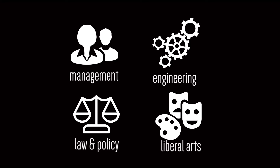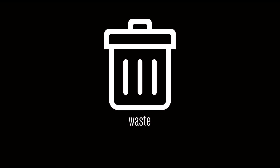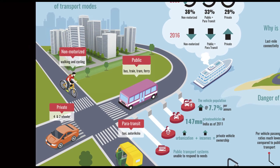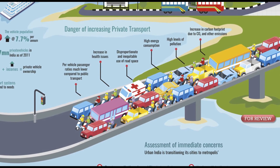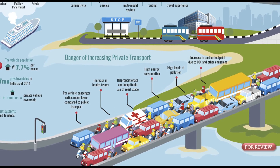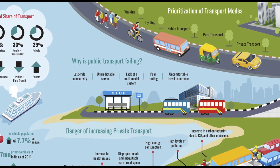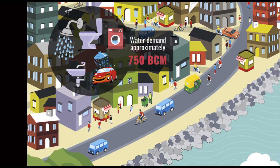Part A is where you tackle the three themes, which are mobility, water, and waste. Part A is essentially an analytical essay writing exercise. What we have asked you to do is pick any one of these issues and develop a blueprint or solution based on certain key objectives and parameters that we have provided.